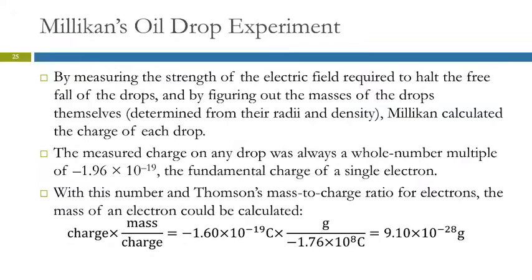And so, they figured out that this number, 1.96 times 10 to the minus 19th, was the charge on an individual electron. And then, they did this calculation using the mass to charge ratio. They were able to calculate the mass of the electron.